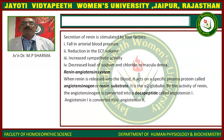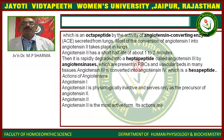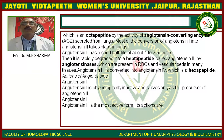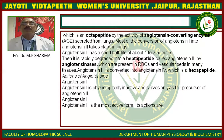When renin is released into the blood, it acts on a specific plasma protein called angiotensinogen, or renin substrate, which is an alpha-2 globulin. By the activity of renin, angiotensinogen is converted into the decapeptide angiotensin-1. Angiotensin-1 is then converted into angiotensin-2, an octapeptide, by the activity of angiotensin-converting enzyme (ACE) secreted from the lungs, where most of this conversion takes place.